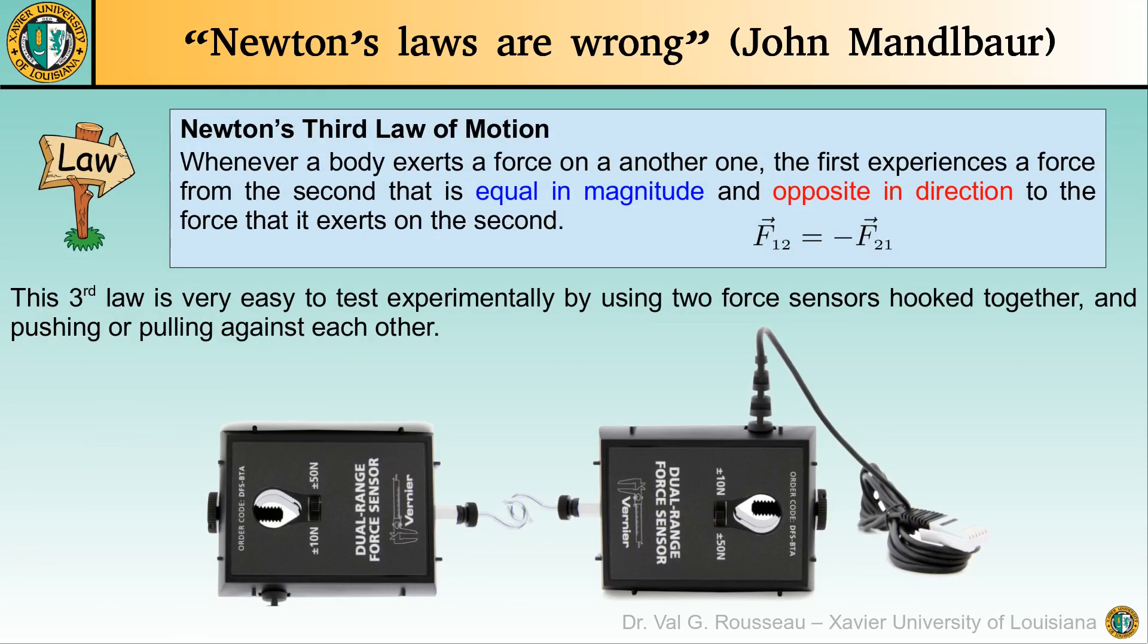The third law says that if a body exerts a force on another one, then the first experiences a force from the second one that is equal in magnitude and opposite in direction to the force that it exerts on the second one.